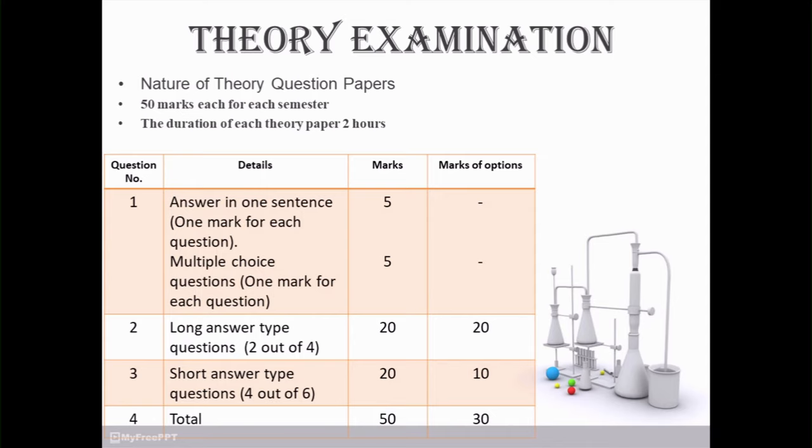If you add all questions, then total weightage is 50 marks, and out of that 50, 30 marks with options. It is a general structure about the theory examinations. It is similar with paper number 5 as well as paper number 6.